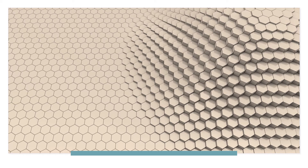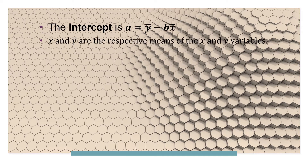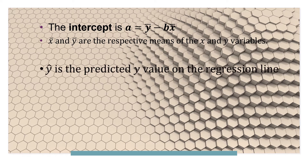We also need the intercept. The intercept is a equals y-bar minus b times x-bar, where x-bar and y-bar are the means of x and y. And y-hat will be the predicted y value of the regression line, where y-hat equals a plus bx. So y-hat can be written as the intercept a plus b, which is the slope, times x.